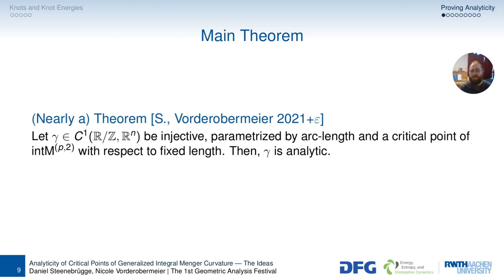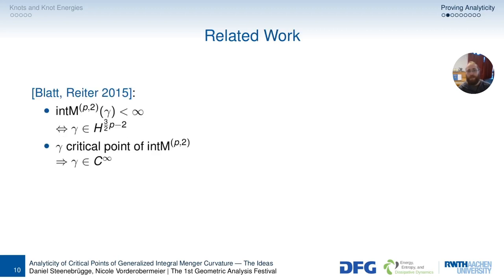How do we prove such a thing? Well, luckily, we don't live in a vacuum. So there's already been work done. First of all, we have this paper by Blatt and Reiter, which introduced the energy. And they said, well, the energy is finite if and only if we are in this fractional Sobolev space. So this is between one and two, regularity-wise. And we know that if gamma is a critical point of the energy, then it's C infinity. That's very nice.